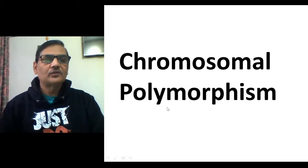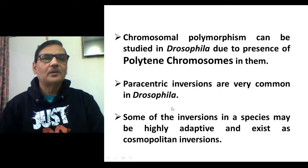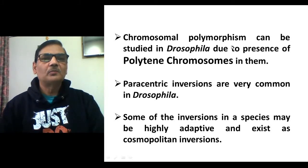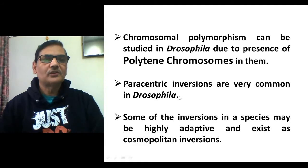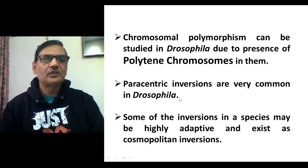Clear-cut variations in the different portions of the chromosome cannot be observed very clearly in almost every form of organism. But that is quite possible in case of Drosophila because Drosophila possesses polytene chromosomes. So chromosomal polymorphism can be well studied in the Drosophila genus due to the presence of polytene chromosomes, and paracentric inversions are very common in this genus. Almost every species of Drosophila possesses some sort of inversions, particularly paracentric inversions which play an adaptive role.